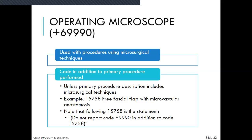Now we're going to talk about the operating microscope, on page 584. Code 69990 is an add-on code and is billed separately when used with the primary procedure. Read the notes carefully for the operating microscope in the CPT — it states clearly when this is a billable service and when it would be bundled into the main procedure. The operating microscope is used when procedures using microsurgical techniques are performed, coded in addition to the primary procedure. For example, do not report code 69990 in addition to code 15758.